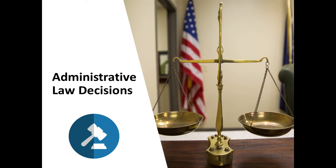Many states have adopted statutes similar to the federal APA. Like the APA, these state statutes outline the rules for how agencies operate, how they promulgate rules, and how they conduct hearings and appeals. Administrative law judges also play a central role in local government and are often responsible for resolving licensing disputes — for example, between a business and the regulatory agency that governs that particular industry or field.